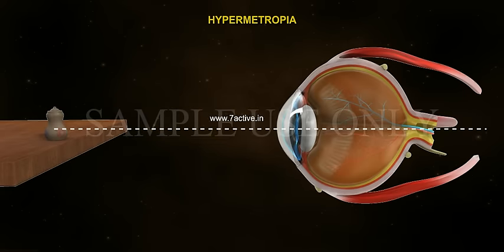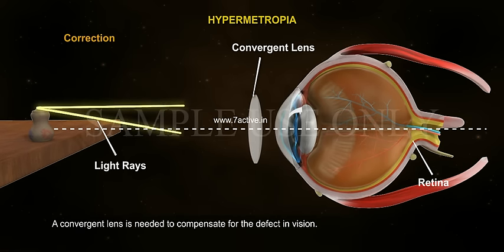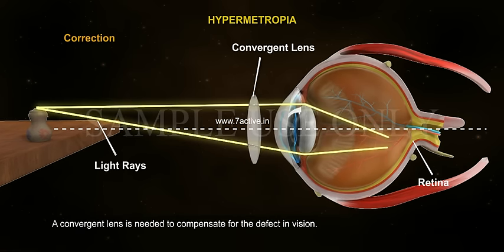The correction for a hypermetropic eye: a convergent lens is needed to compensate for the defect in vision.